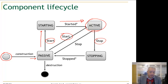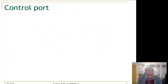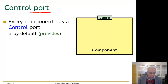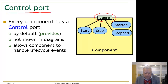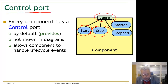This lifecycle is handled by a special interface we call the control port. Every component has a control port and the programmer does not need to explicitly declare it — it is there by default. Each component provides a control port, and it will not be shown in our diagrams. A control port accepts start events sent to a start handler, stop events sent to a stop handler, and they trigger stopped and started events to the parent component, allowing components to manage lifecycles.